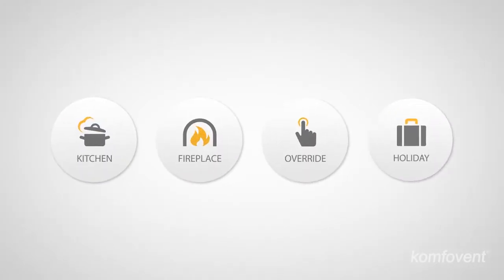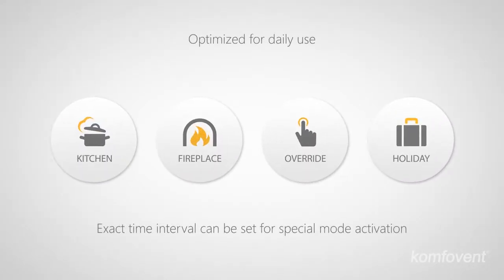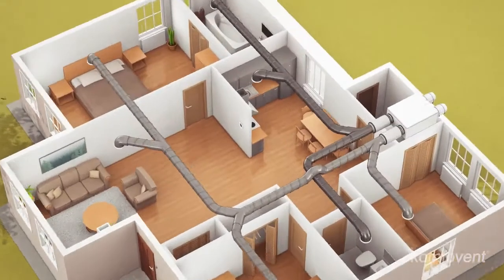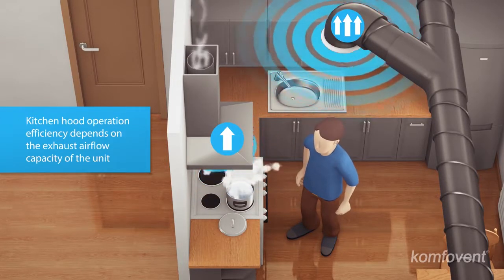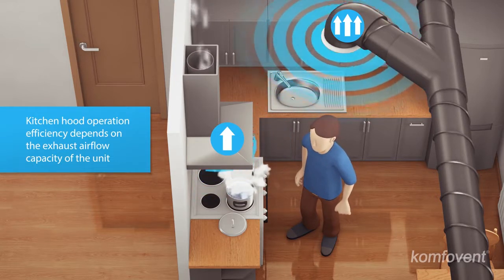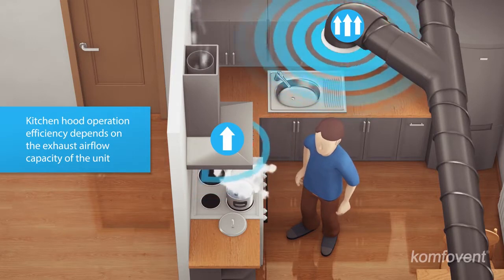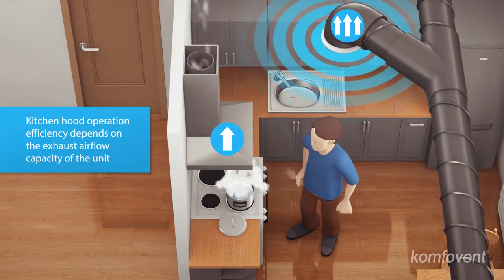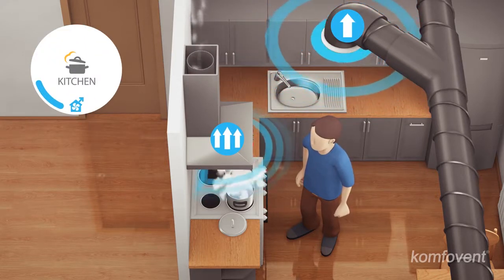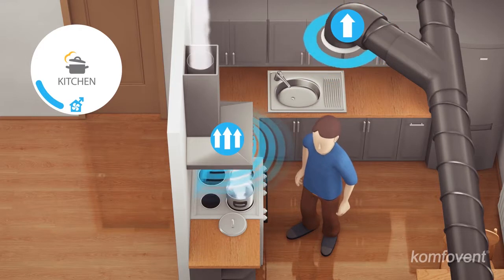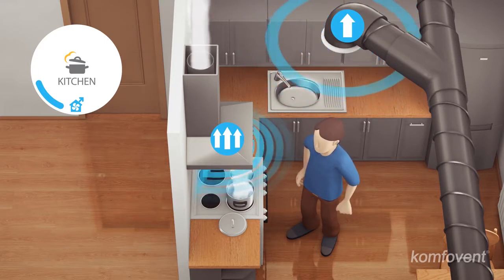Special ventilation modes allow you to save energy and ensure comfort in various daily situations. When you turn on the kitchen hood, it removes a large amount of air. Therefore, the pressure difference created between indoors and outdoors reduces the hood's performance and results in worse removal of odors and combustion products. Smart control allows you to select a special mode that reduces the air volume exhausted by the air handling unit, so upon adjustment of air flow, the hood can operate effectively.